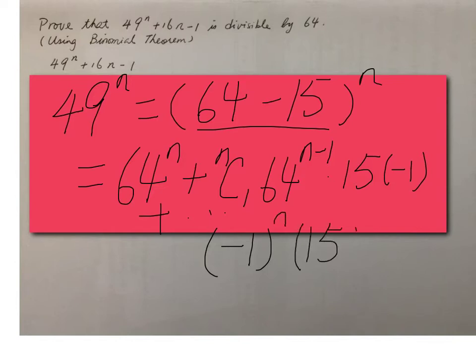Now, then in this case, you will find that this expression looks quite complicated. And it seems that it cannot be simplified by adding 16n and minus 1. That's why by rewriting 49 as 64 minus 15 may not be a good choice.